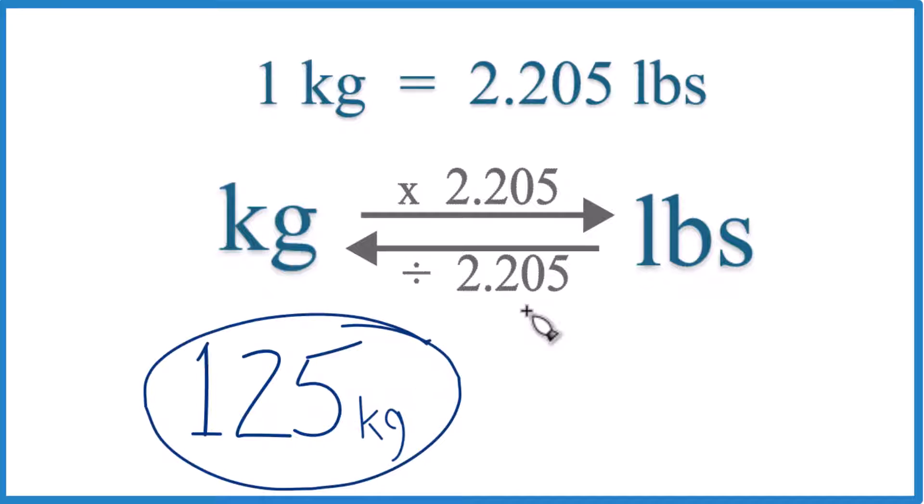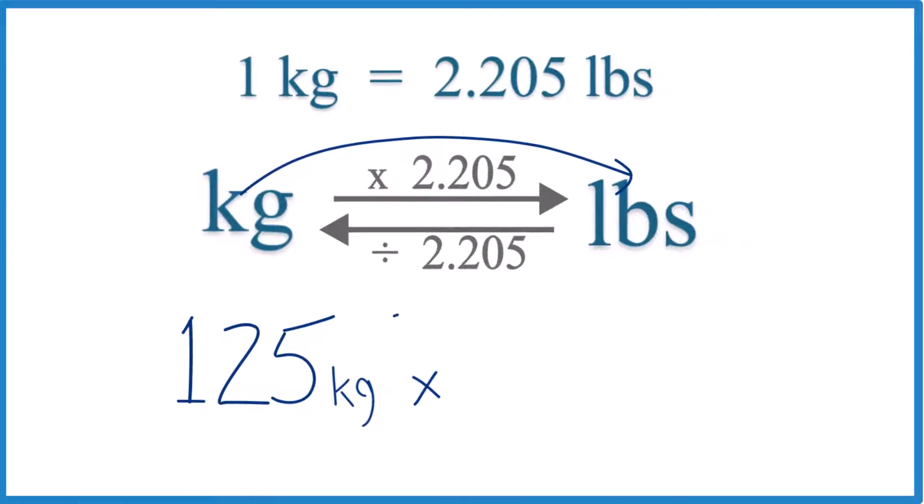Since we have 125 kilograms, we're going kilograms to pounds. We're going to multiply by that 2.205 number, like this.